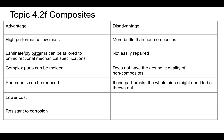The laminate ply patterns can be tailored to omni-directional or multi-directional mechanical specifications. If you want them to be strong in all directions, that can happen with a composite material. Compare that to natural wood, which is easier to split along the grain and is not omni-directionally strong. In taekwondo, when breaking boards, they're always breaking along the grain so that it splits much more easily.